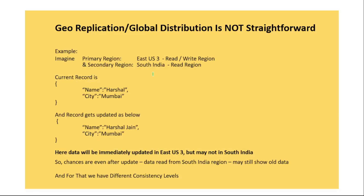Geo-replication is useful but not straightforward. Imagine our Azure Cosmos database has East US3 as the primary read-write region and South India as a secondary read region. The current record shows name: Herschel, city: Mumbai. If we update it to name: Herschel Jain, city: Mumbai, the data is immediately updated in East US3. However, if a user reads from the secondary region shortly after, they may still see the old data — that's why we have different consistency levels with geo-replication.